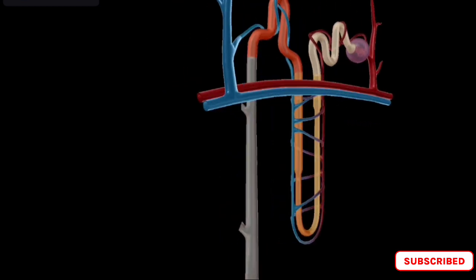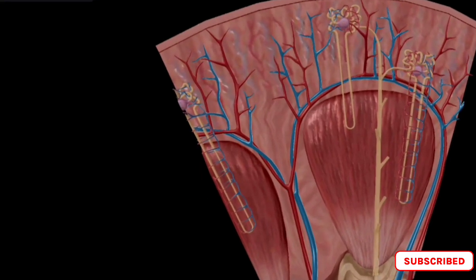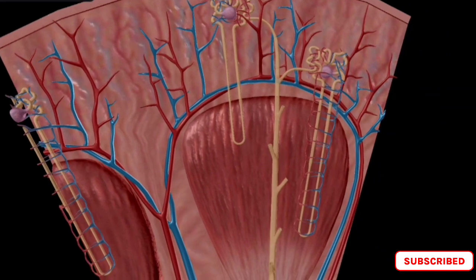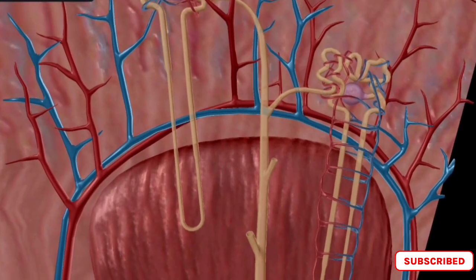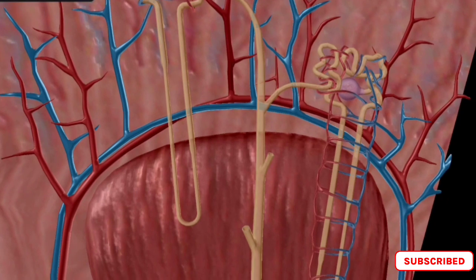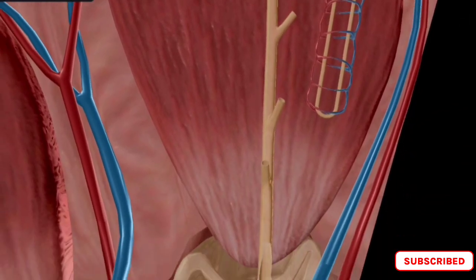After urine is formed in the nephrons, it travels down the collecting ducts, which are long tubules that run through the medulla and into the renal pelvis. The collecting ducts merge together to form larger tubes called the renal papillae. The renal papillae drain into the minor calyx, which then merges to form the major calyx, which further merges to form the renal pelvis — a funnel-shaped cavity that collects urine from the major calyces.